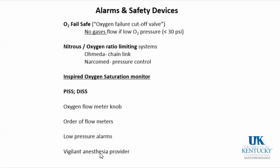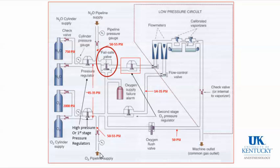We have a number of safety devices. One is the oxygen fail-safe. As discussed previously, there's a fail-safe device that when oxygen pipeline pressure drops below approximately 30 PSI, it turns off all other gases. This was most relevant in the era when we commonly used nitrous oxide — if oxygen pressure drops, it shuts off the nitrous so you can't deliver pure nitrous. However, this only measures pressure, and as long as pressure is adequate, you could still dial in a hypoxic mixture.